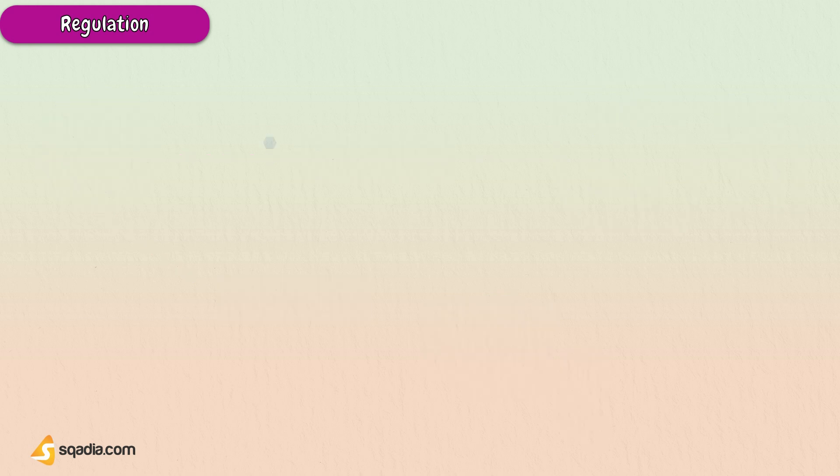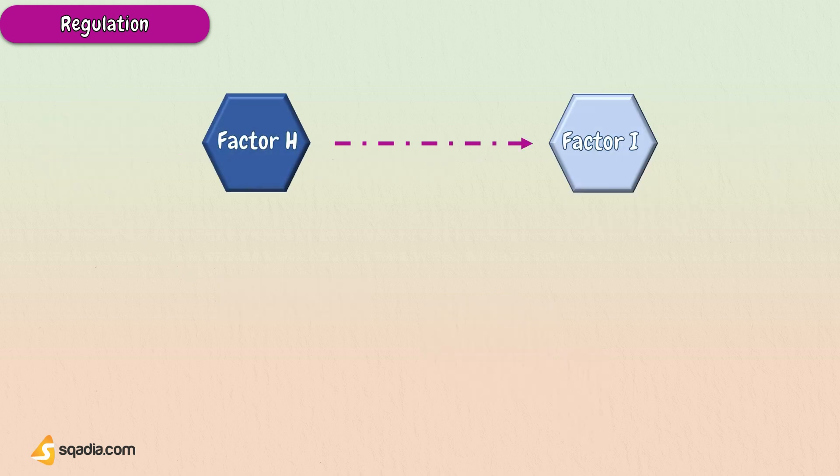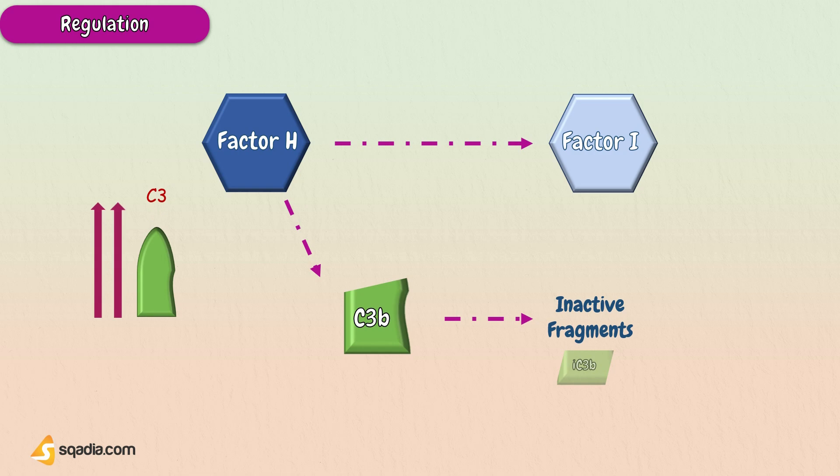Factor H, which acts as a cofactor for Factor I, is part of the alternative pathway. Factor H breaks C3B into inactive fragments. Factor H fails to regulate the complement system if the concentration of C3B in the bloodstream is increased, that is, Factor H and I become overwhelmed. Factor I catalyzes the cleavage of C3B at multiple sites.